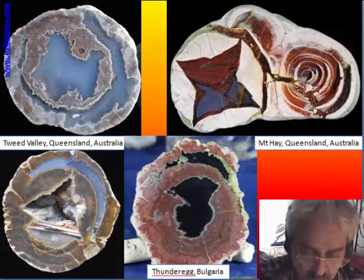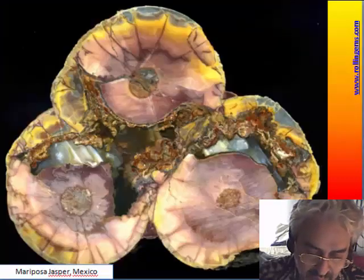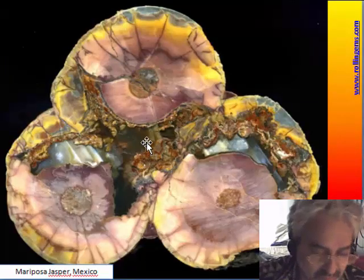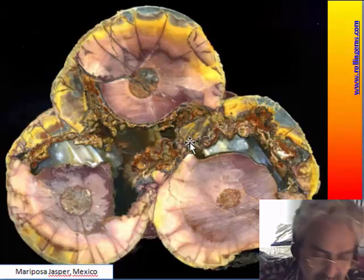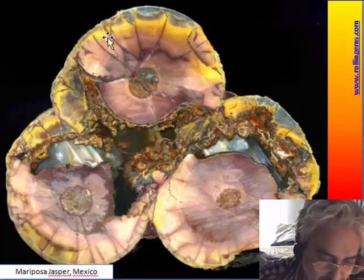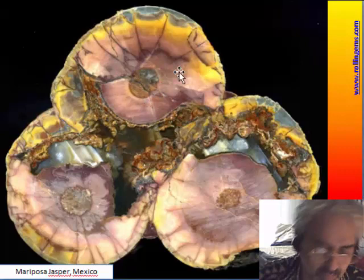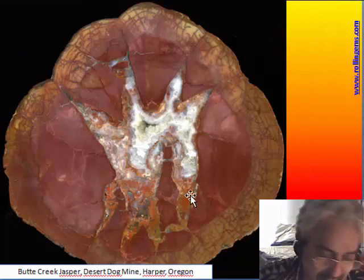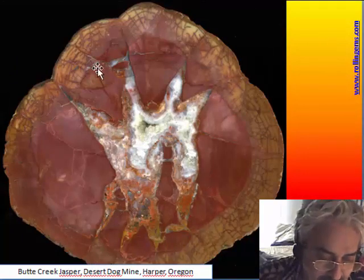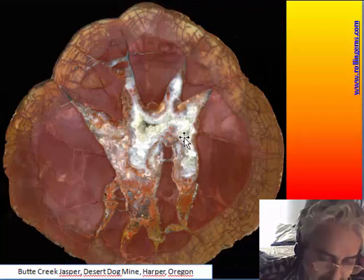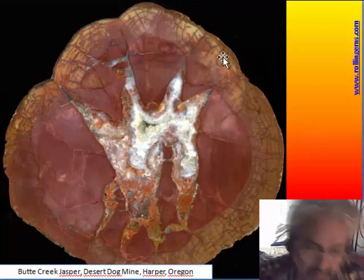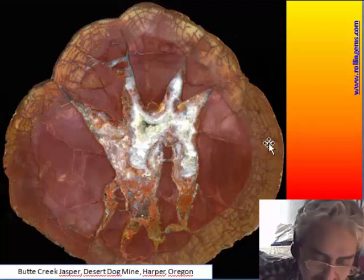There is the possibility of many associations of different kinds of fractures. This is a famous jasper from Mexico — mariposa jasper, or butterfly jasper — with many colors and large fibrous spherulites of 5 to 6 cm diameter. This is another very large thunder egg from Harper, Oregon, where we can see at the center a star-shaped fracture and in the outer shell different patterns of fracturing.